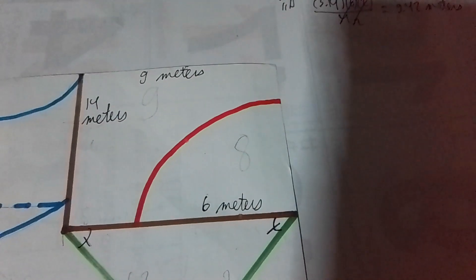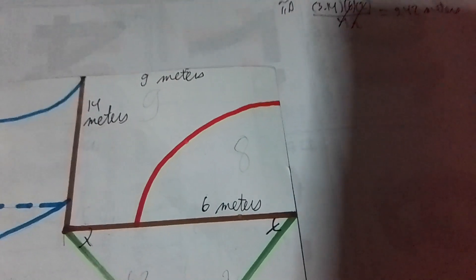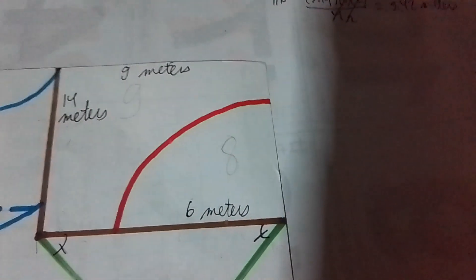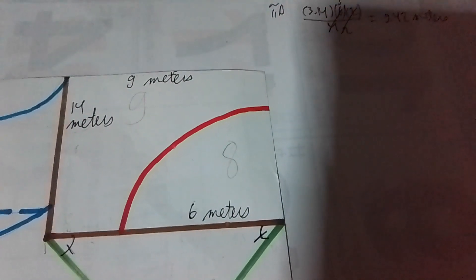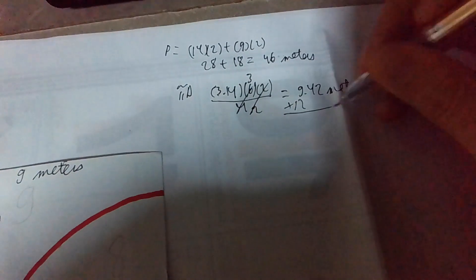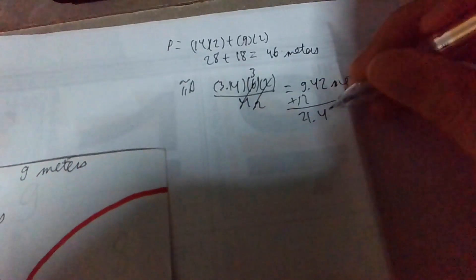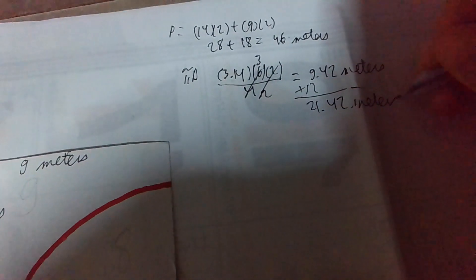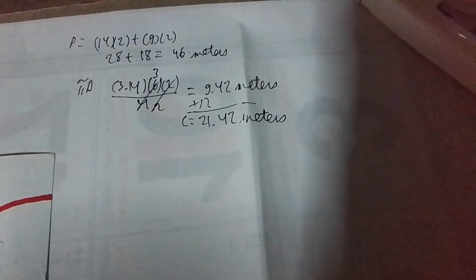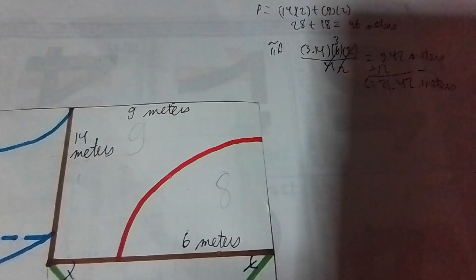To add up the radii, it's just adding the radii together. Plus 6 plus 6 or 12. Therefore, the final answer is 21.42 meters. That's the circumference of the one-fourth of a circle.